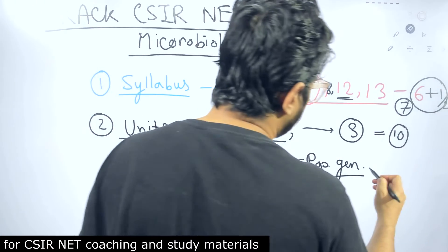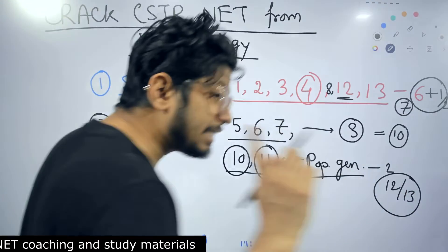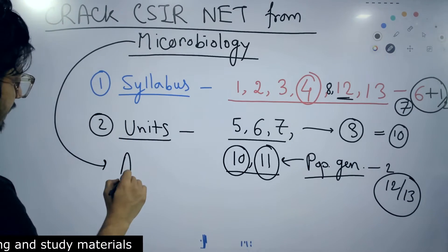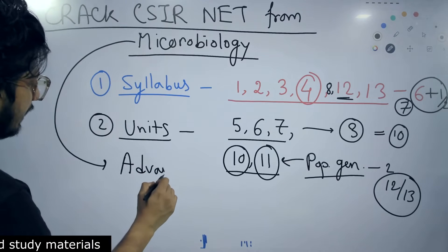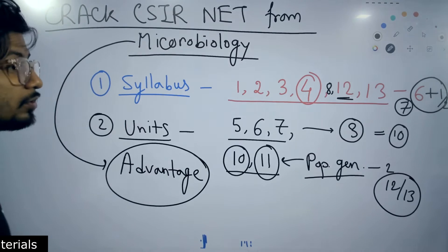With a little extra effort you can prepare two more units, so that will be 12 out of 13 units common. That is why I always say individuals from microbiology background will get a sure advantage of qualifying CSIR NET examination.